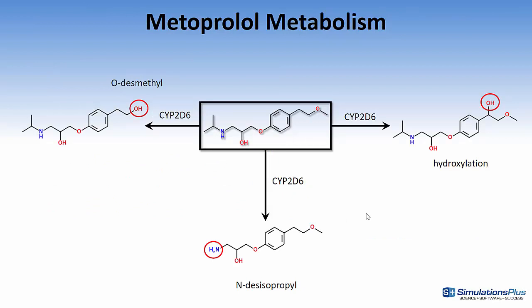Metoprolol is primarily metabolized by CYP2D6. Here I show the hydroxylation product on the carbon next to the phenyl ring. It also removes the isopropyl group to form the N-desisopropyl compound, and the methoxy group is demethylated to form the O-desmethyl. The KM for the clearance of Metoprolol is 26 micromolar. The VMAX is 423 picomoles per minute per milligram of microsomal protein. We'll be entering this data into the enzyme table.